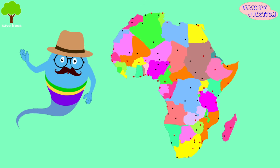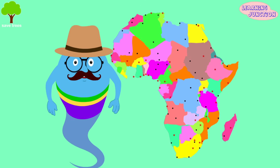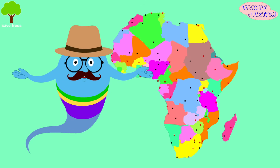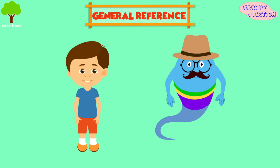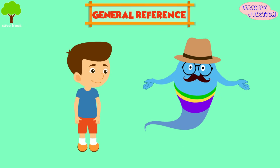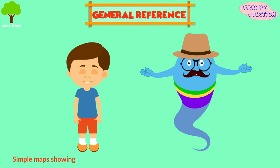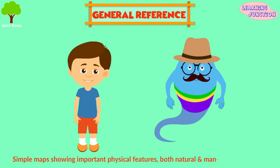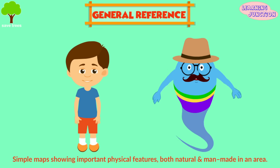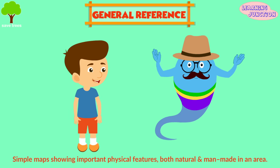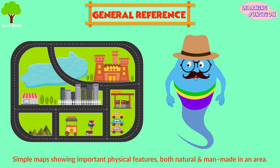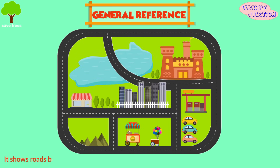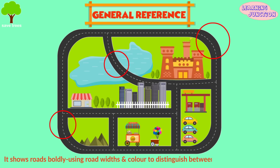There are many types of maps. Let's see the five main types one by one. General reference map — these are simple maps showing important physical features, both natural and man-made, in an area. For example, see this road map? It shows the roads boldly, using road widths and colors to distinguish between major and minor roads.